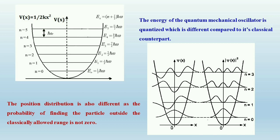The first four wave functions ψ₀, ψ₁, ψ₂, ψ₃ are plotted, along with their corresponding probability densities |ψ|², showing how the position distribution differs from the classical case. Notably, the probability of finding the particle outside the classically allowed range is not zero — the wave function ψ has a finite, non-zero value outside the parabolic potential ½kx². So for the quantum harmonic oscillator, it is possible to find the particle outside the classical allowed range, which is a distinct characteristic compared to the classical counterpart.